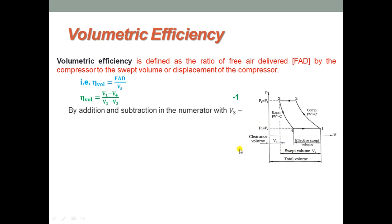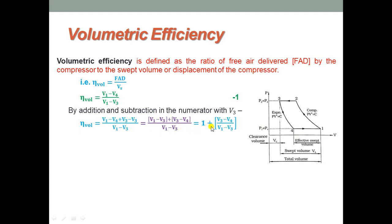By adding and subtracting V3 in the numerator, we can write the expression as (V1 minus V4 plus V3 minus V3) over (V1 minus V3). After rearranging the terms in the numerator, we get (V1 minus V3 plus V3 minus V4) over (V1 minus V3), which simplifies to 1 plus (V3 minus V4) over (V1 minus V3). Further rearranging gives 1 plus V3/(V1 minus V3) minus V4/(V1 minus V3). This is equation number 2.